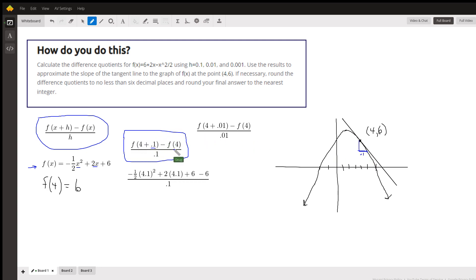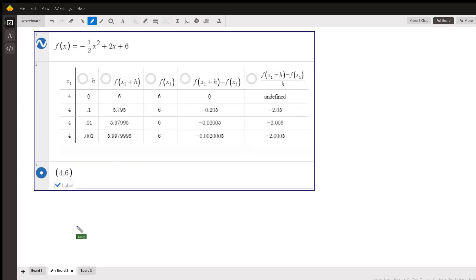This numerator is the rise. It's f(4.1) rather, which is some number down here, and we're subtracting 6 from that to get the change in y, delta y. The change in x is 0.1, and that's what we're dividing by here. So this is the calculation you'd have to do. That's pretty tedious, but here's the same idea for h of 0.01.